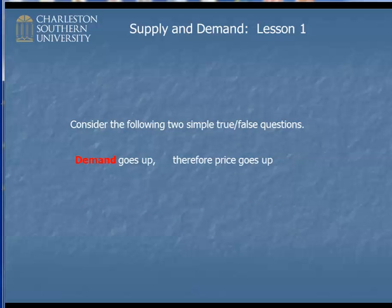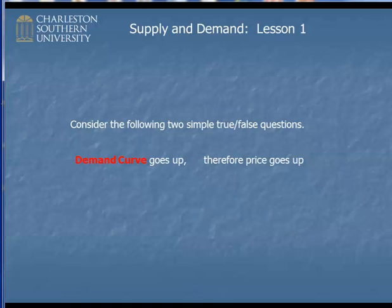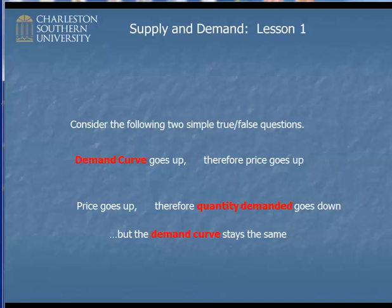The reason is because of this word, demand — it has two very different meanings. In the first case, it should say demand curve. A demand curve is a tendency or a desire of people to buy something. The technical definition is it's a schedule of all the possible prices and the corresponding quantities demanded. In the second case, they're not talking about a tendency or desire for people to buy something — they're talking about how many they bought. The price went up, therefore people bought less. They might still desire it just as much as before, but at the higher price they bought less. And here's the kicker: the demand curve stayed the same.